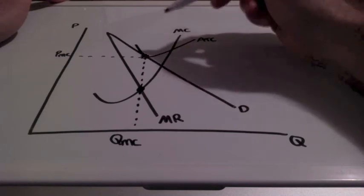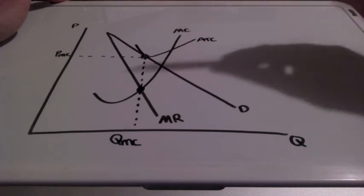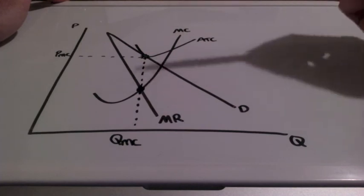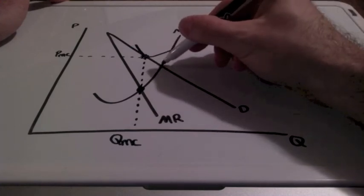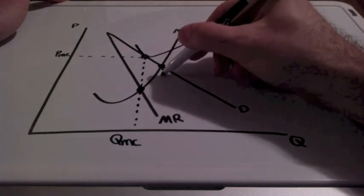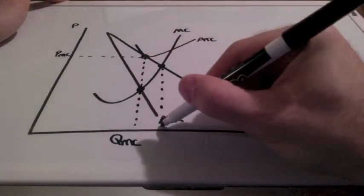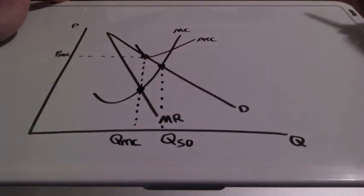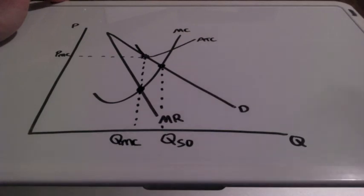So this represents productive efficiency. The firm is producing at its lowest possible cost. But as you can see, the firm is not allocatively efficient because the firm is not producing here. The firm is not producing where demand equals marginal cost. And that represents the socially optimal quantity.